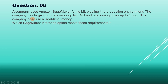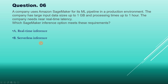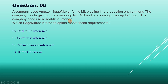Question 6: A company uses Amazon SageMaker for its ML pipeline in a production environment. The company has large input data sizes up to 1 GB and processing times up to 1 hour. The company needs near real-time latency. Which SageMaker inference option meets this requirement? Options: A) Real-time inference, B) Serverless inference, C) Asynchronous inference, D) Batch transform. Note that 'near real-time' is the key phrase here.